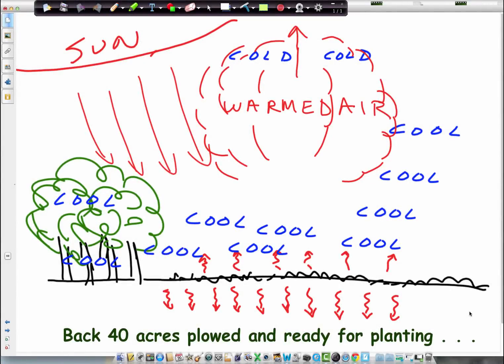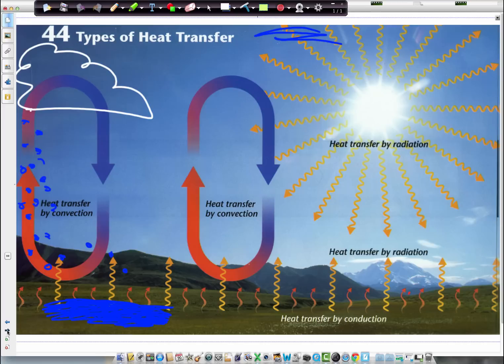We call this process convection, where warm air heats and rises above the ground, and cool air comes in to take its place.